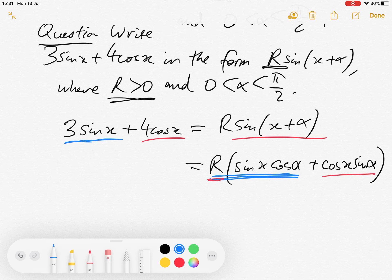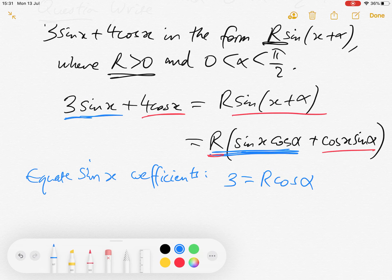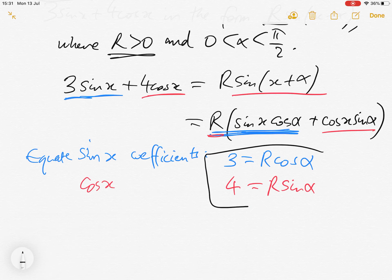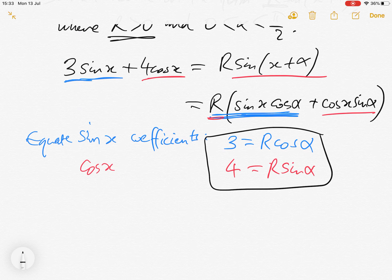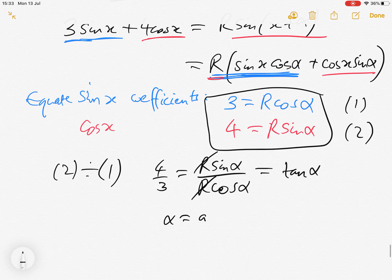So we're equating, so first in blue let's equate sin x coefficients. On this side we've got 3, on the other side we've got r cos alpha. And then if we do the same for cos x, we're going to get 4 equals r sin alpha. And then in red and blue here we've got a system of two simultaneous equations in r and alpha. So question, how do we find alpha? What's the easiest way to find alpha? It's probably to divide the two equations. 2 divided by 1 gives 4 thirds is r sin alpha over r cos alpha. So the r's cancel and sin over cos is tan. So alpha is arc tan of 4 thirds. And you can enter that on your calculator.